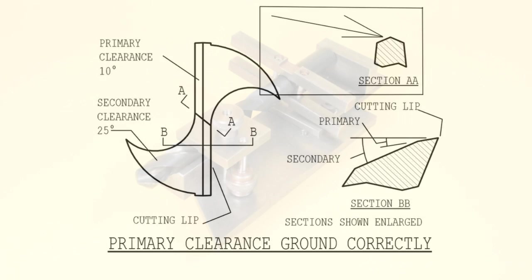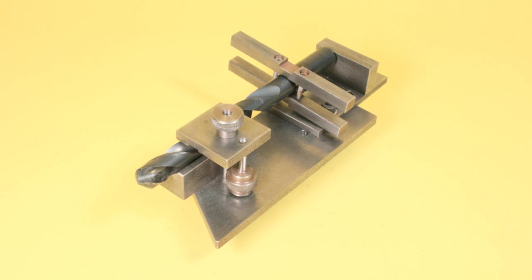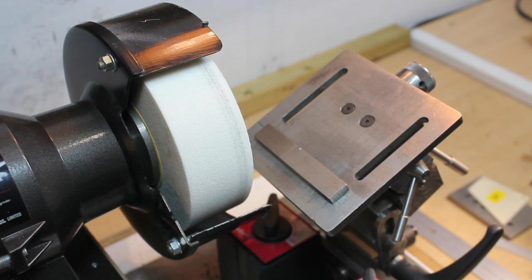I should have commented earlier that the drill point angle of 118 degrees is achieved by the end of the jig being used having an angle of 59 degrees. I will now start to show the actual grinding taking place, grinding the secondary angle first.